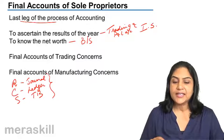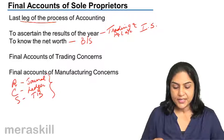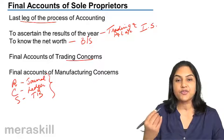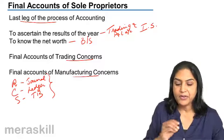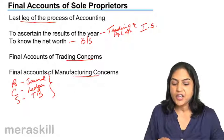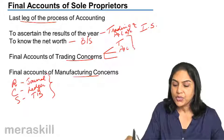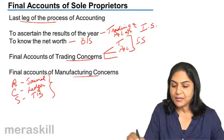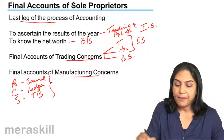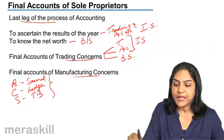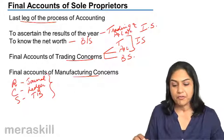We will discuss the accounts of sole proprietors under two headings: one for trading concerns and one for non-trading concerns or manufacturing concerns. In case of trading concerns, we will have the trading account and the profit and loss account — which together is the income statement — and the balance sheet. So we have an income statement and a position statement.